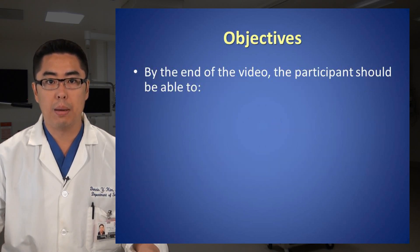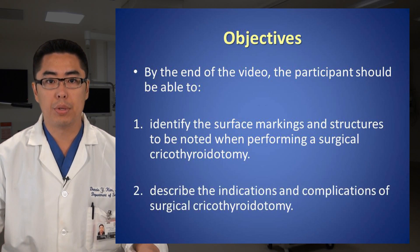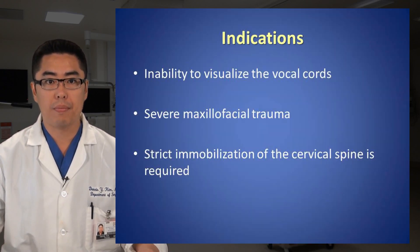By the end of the video, the participant should be able to: 1. Identify the surface markings and structures to be noted when performing a surgical cricothyroidotomy. 2. Describe the indications and complications of surgical cricothyroidotomy. 3. Indications for surgical cricothyroidotomy.